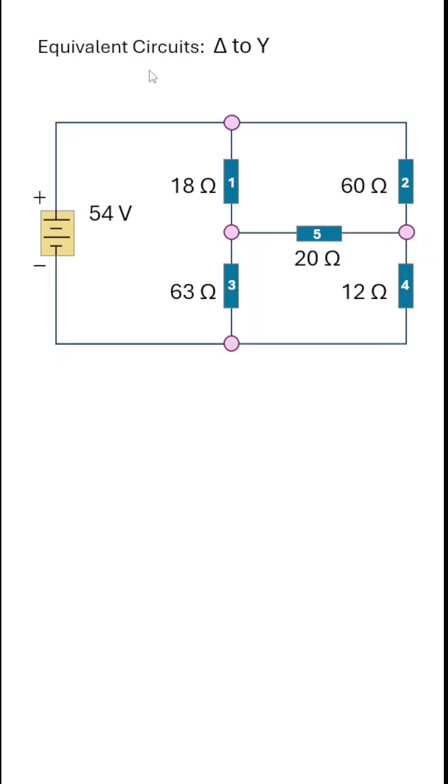Solving the Wheatstone bridge with a delta-to-Y equivalent circuit. Here's a circuit with numerical values, and we'll indicate the junctions and show a node table. Zero volts at D, and that makes node A 54 volts.